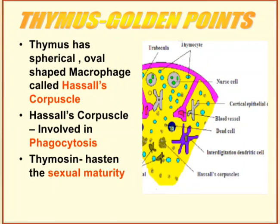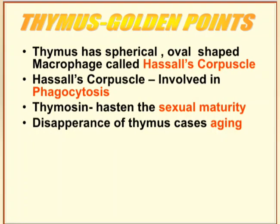The thymosin hormone also involves another important function: it speeds up sexual maturity. As already discussed, when people reach old age, the thymus completely disappears. So the disappearance of the thymus causes aging. It is an important point that thymosin hastens sexual maturity and the disappearance of the thymus gland is responsible for aging.